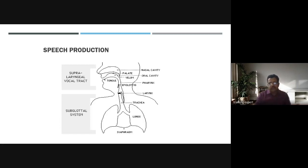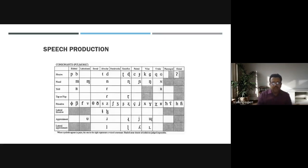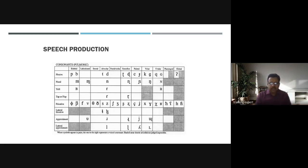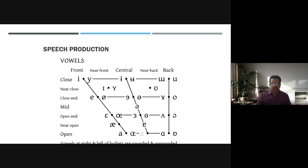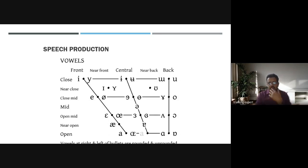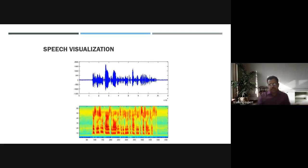The nasal cavity is also part of voice production. Consonants are divided based on how they are spoken — nasals, laterals, and different voice pitches. Vowels such as A, E, I, O, U are divided with respect to close, mid, and open positions, and whether they are front, central, or back depending on tongue movement.